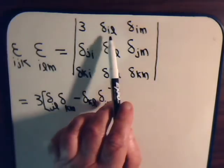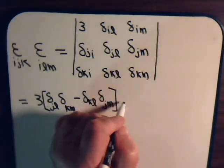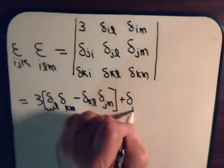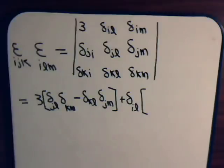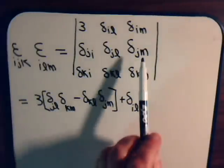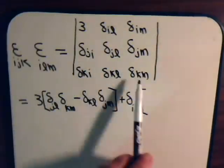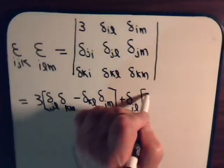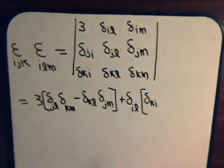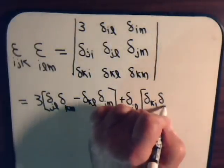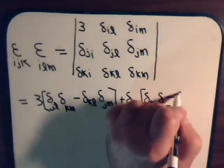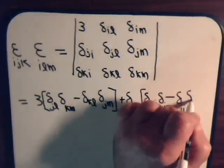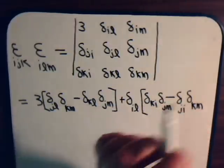Then we will have, writing this as plus as we go across: plus delta_IL times. Now if we make that plus, then we have to have it like this: delta_KI times delta_JM minus delta_JI times delta_KM. So we have delta_KI * delta_JM minus delta_JI * delta_KM.